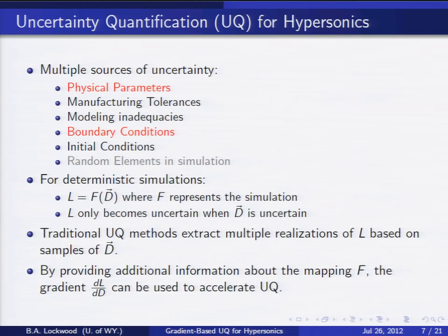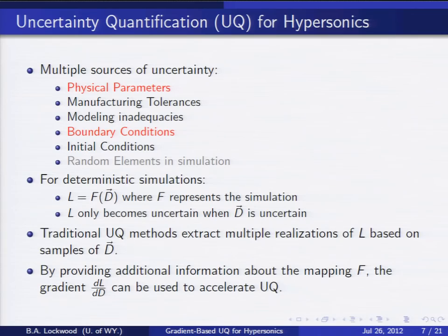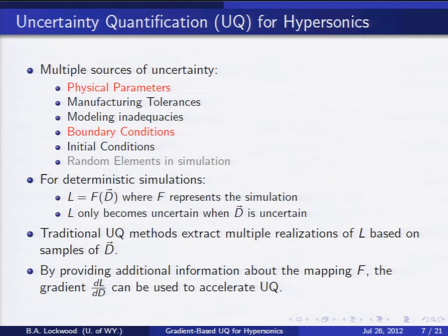In the context of hypersonic flow, there are multiple places where uncertainty can enter the simulation. The specific sources I looked at are the uncertainty in the physical parameters and the uncertainty in boundary conditions — mainly the incoming flow conditions. Because I'm solving the deterministic Navier-Stokes equations, my output is only uncertain in the context of uncertain inputs. We can represent the simulation as a mapping F of inputs to outputs: if we sample at multiple inputs and run the simulation, we build up a distribution on the objective L.